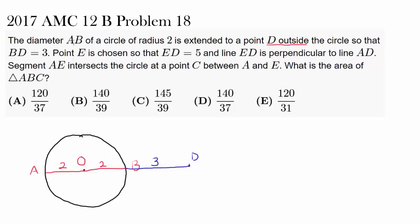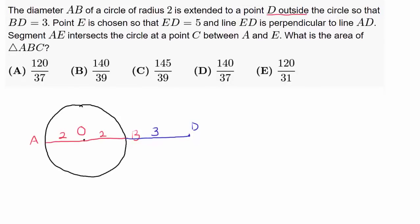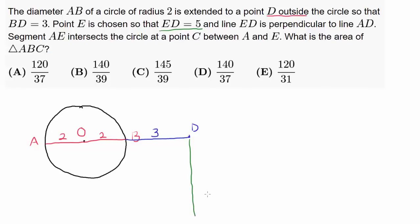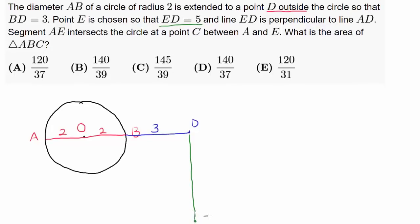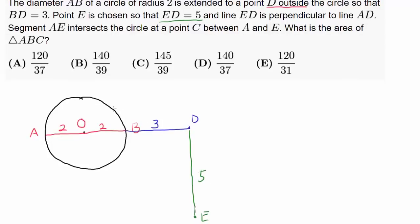Point E is chosen so that ED equals 5 and line ED is perpendicular to line AD. It does not matter if you go up or down — it's going to be symmetric. Let's go down since we have more space. So we go down 5 steps and put E right here. Notice that OD is 2 plus 3 equals 5, and ED is also 5, so OD and ED have the same length. Maybe we can utilize that later.